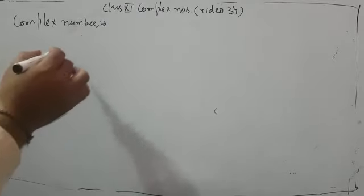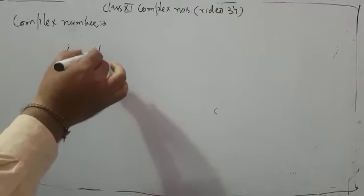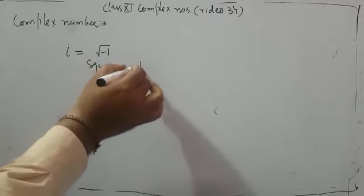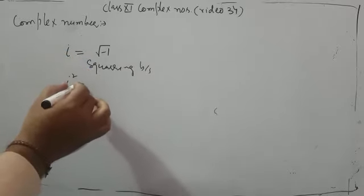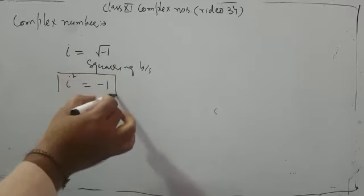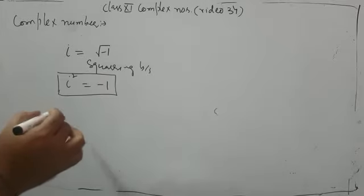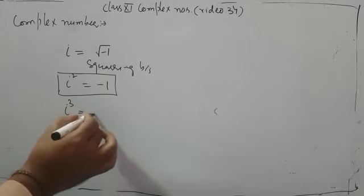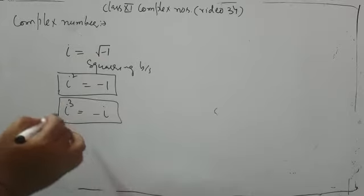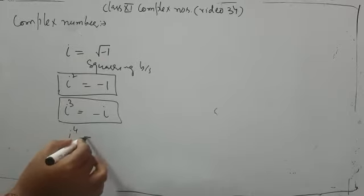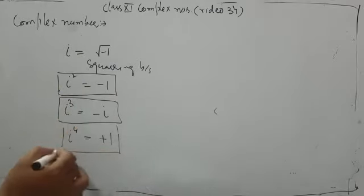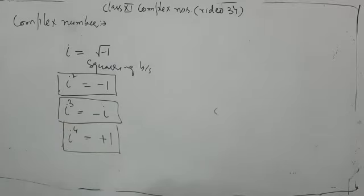As I told you in the last video, iota is the square root of minus 1. If we do squaring on both sides, i² = -1. Similarly, i³ = -i, and i⁴ = +1. You must remember all of these — i² = -1, i³ = -i, i⁴ = +1 — as we will use them when solving questions.